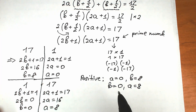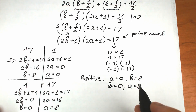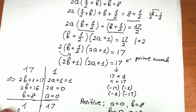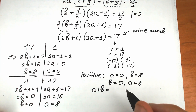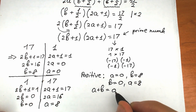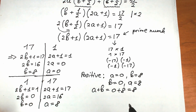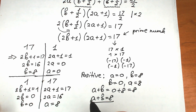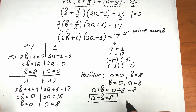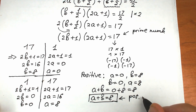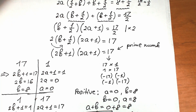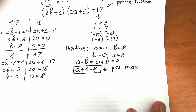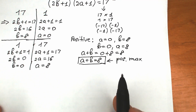For the positive cases, we have a = 0, b = 8 and b = 0, a = 8. In both cases, a plus b equals 0 plus 8 equals 8. So the positive maximum of a plus b equals 8.